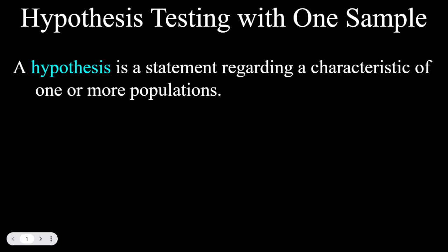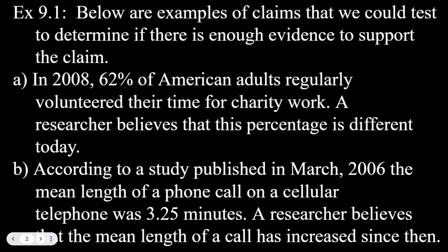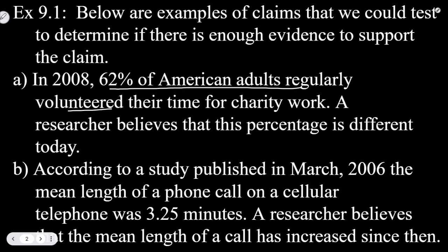Let's look at some different hypothesis statements. Below are examples of claims that we could test to determine if there is enough evidence to support the claim. In 2008, 62% of American adults regularly volunteered their time for charity work. A researcher believes that this percentage is different today. So we have the original statement — 62% of Americans regularly volunteer — and then the researcher's claim that the percentage is different today. That's something we could test with sample information.